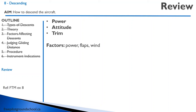Let's review this lesson. The procedure for entering a descent is power, attitude, trim — reduce the power, adjust the attitude, and trim the aircraft. The factors that affect a descent are power setting, flaps, and wind. Thanks for joining me on this preparatory ground instruction for descent. We'll see you on our next lesson on turns.